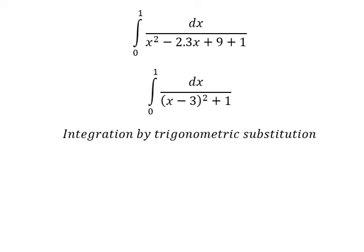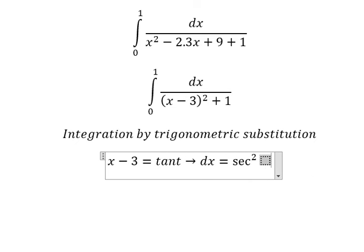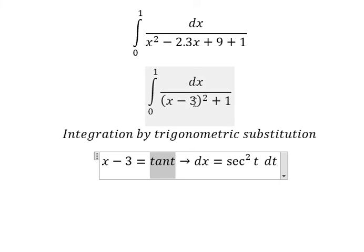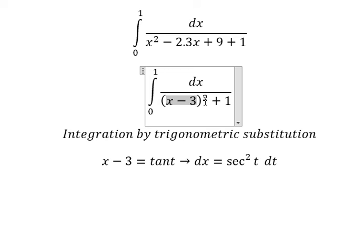I will put x minus 3 equal to tan(t). If we do the first derivative for both sides, we have sec²(t) dt. The reason I need to put this in here is because if I put x minus 3 equal to tan(t), tan(t) will go in here, you got tan²(t) plus 1.